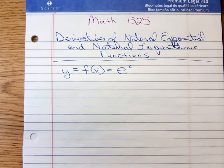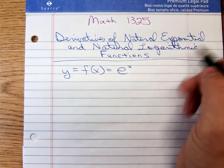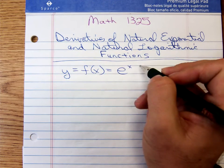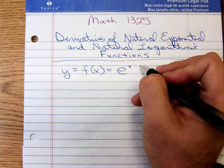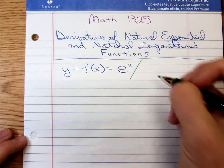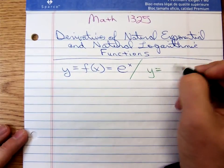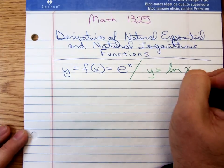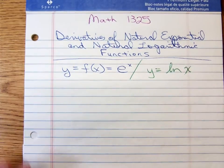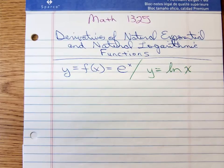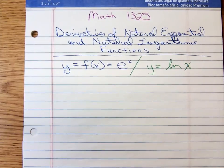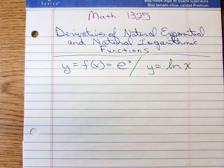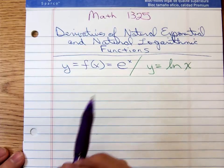The natural logarithm function is y equals — we denote it with an LN — it's the logarithmic function to the base e. I know y'all have seen those in your previous math classes, and what we want to do is differentiate these.